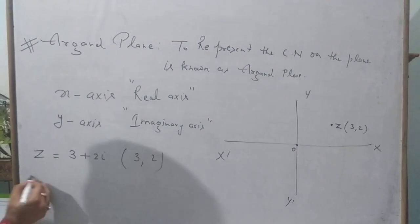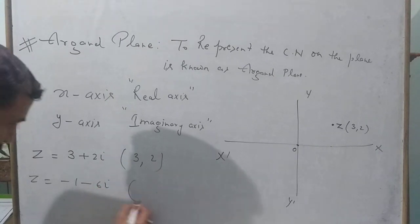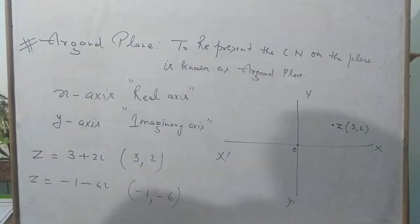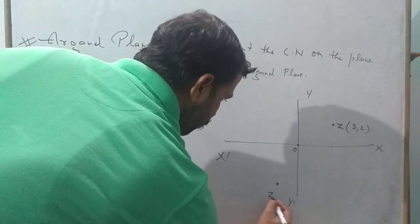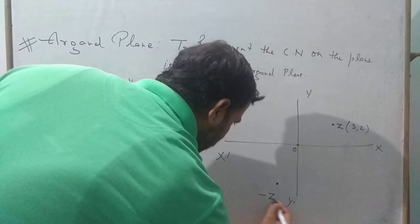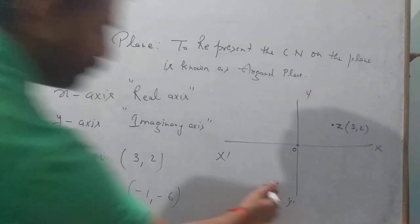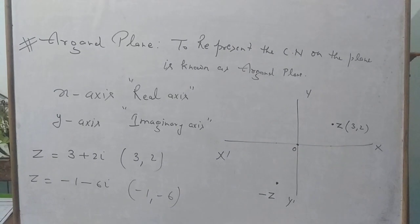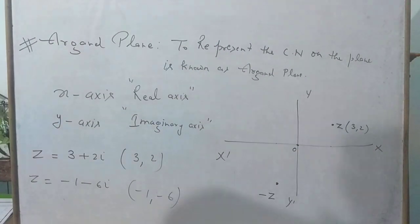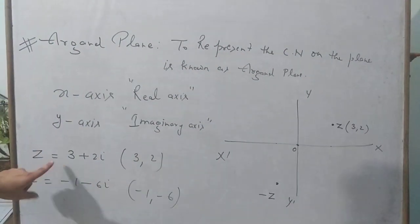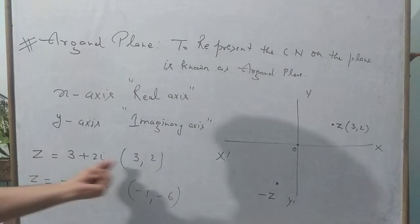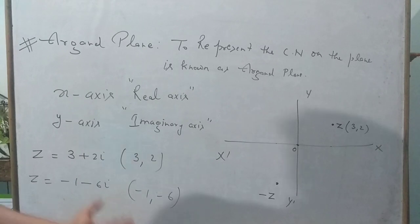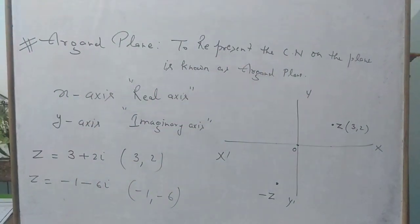If Z equals minus 1 minus 6i, the point is (-1, -6). This is minus 1 on the real axis and minus 6 on the imaginary axis, lying in the third quadrant. Whenever a complex number is given and you need to plot it on this plane, identify the real value X, the imaginary value Y, and plot accordingly. That is the Argand plane.